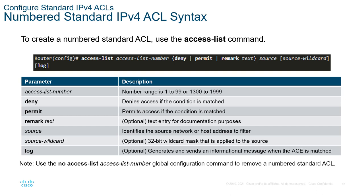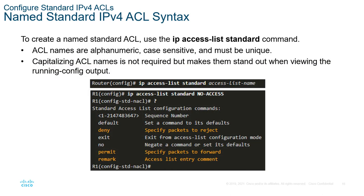It's optional, but we can also log the ACL entry. To remove an access entry, we can do 'no access-list' and the appropriate number, which will remove that numbered ACL from the configuration. For a named ACL, we use 'ip access-list standard' followed by the name. For an extended named ACL, we use 'ip access-list extended' and the appropriate name. This puts us into a different sub-command mode where we can issue our statements as well as our sequence numbers.